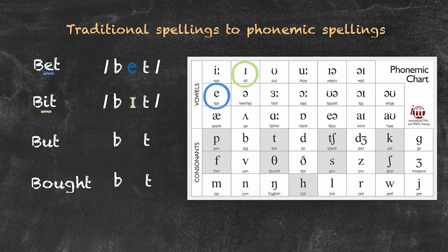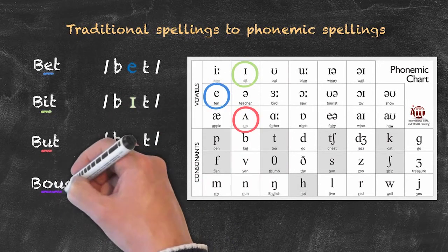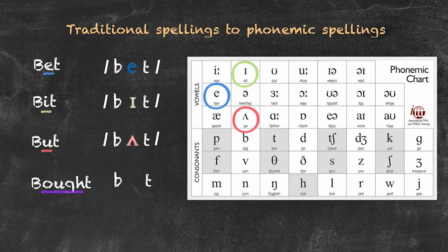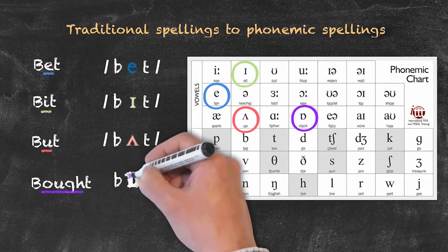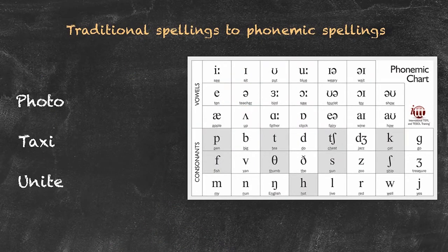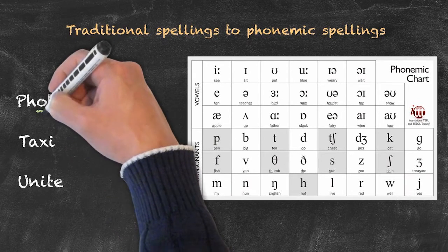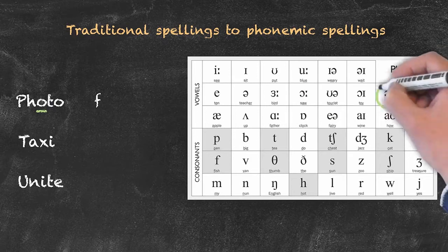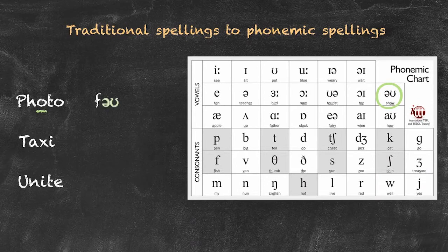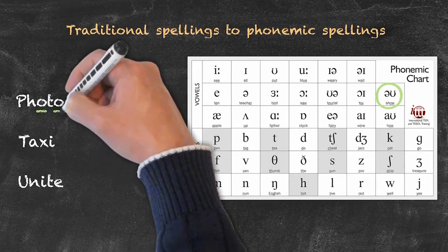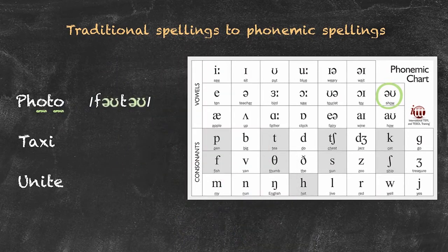With 'butt,' we have to find the UH sound, which corresponds to this symbol, as in 'cut,' and we arrive at 'butt.' Finally, we have 'bought' — we find the phoneme for the short O sound in our pure vowels, where this symbol is used in 'pot,' and that's the same sound as in 'bought.' Now we can take a look at the word 'photo.' We have F, and we need to find a phoneme for the OH sound — we locate this symbol on our chart, giving us F-OH-T-OH — four phonemes.